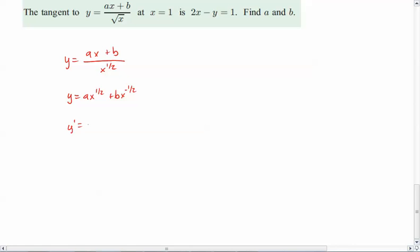Because then I can take the derivative really easily, which will be, so I move the 1 half in front, which will be 1 half ax to the negative 1 half. Then we do the same thing here, minus 1 half bx to the negative 3 halves.